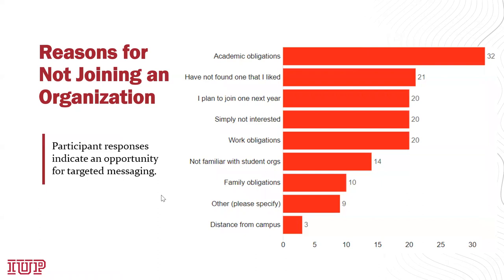Even though I targeted 2,000 student organization members, I knew in advance that not all of those students would actually be members, even though they were coded as such in the student information system. So I wanted to explore both groups — why did you join and why did you not join. The main finding was that these students are persuadable. If you look at the reasons why they didn't join — we can't do much with academic obligations through communications — but if they haven't found one they liked, plan to join next year, they're willing to take action. We can spur them to do it a little bit earlier. Simply not interested? We can explain why they should join. Not familiar with student organizations? That can certainly be solved with messaging.